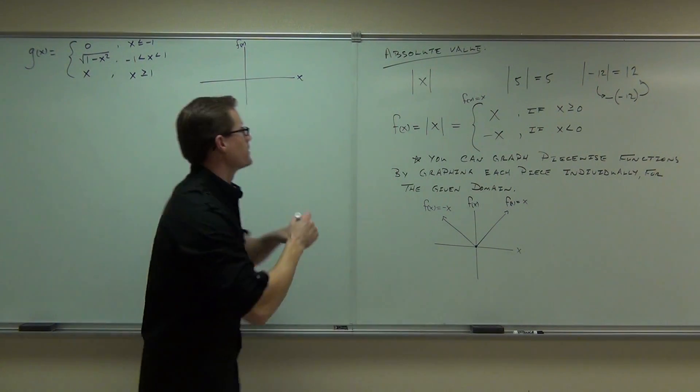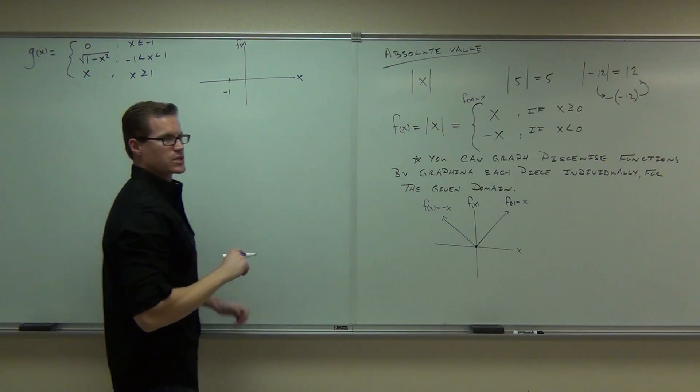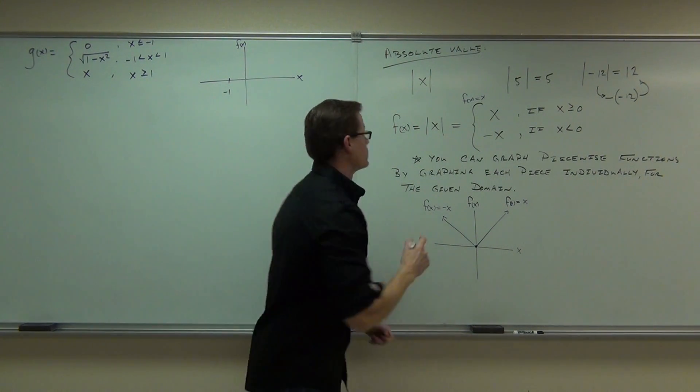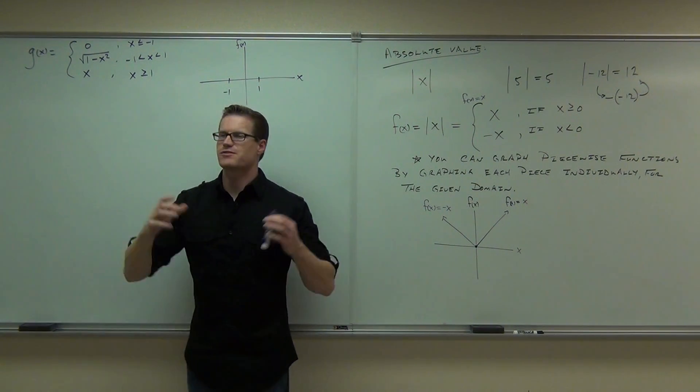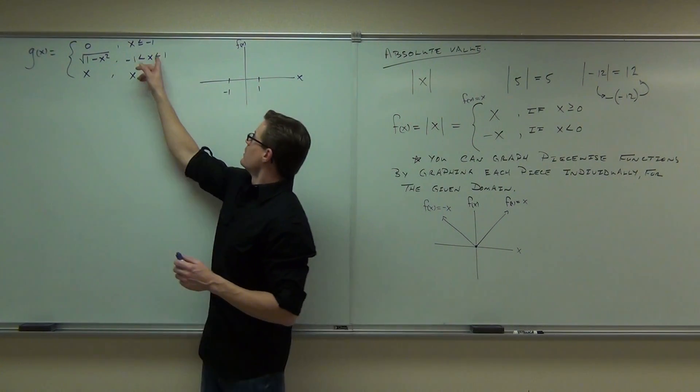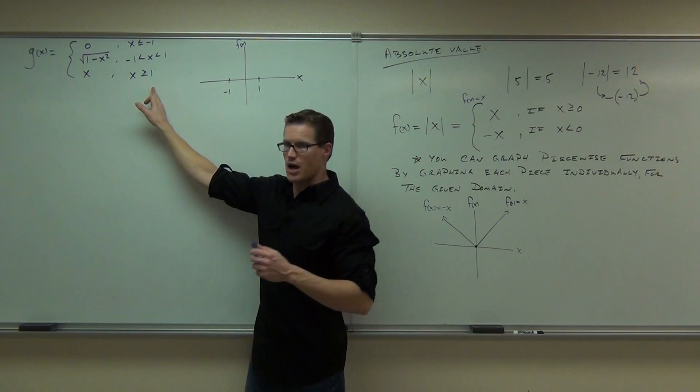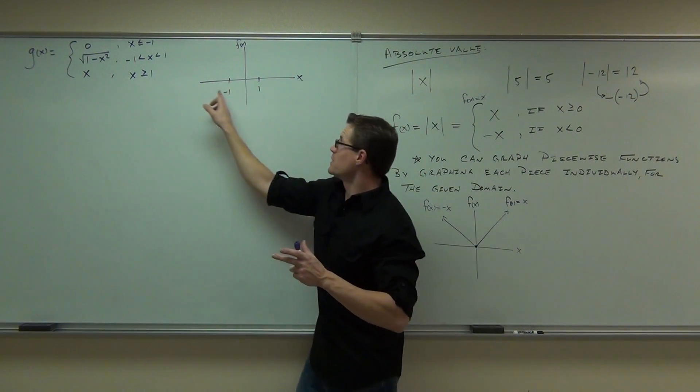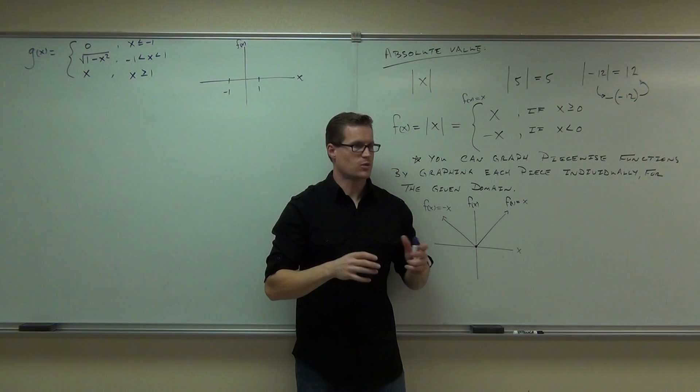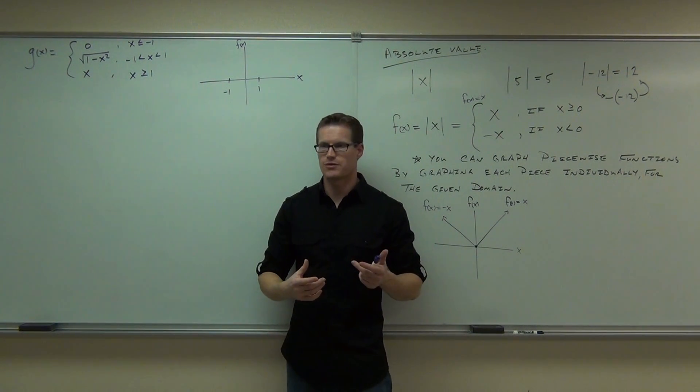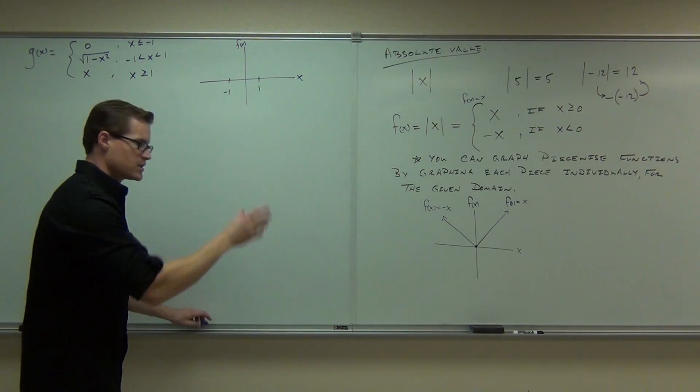I want you to find the places where you're switching between functions. One place is negative one. Where's the other place? One. Here's what our directions say. Piecewise functions have directions. For a certain range that's less than or equal to negative one, I'm going to be doing something. Between these two numbers, I'm going to be doing something else. After this number, I'm going to be doing something else. That's how piecewise functions work.